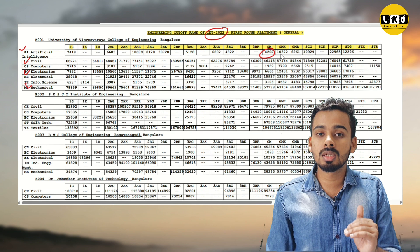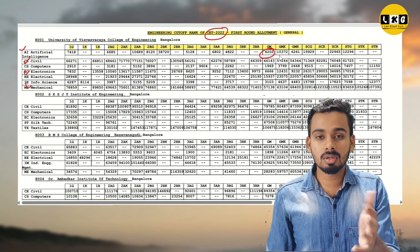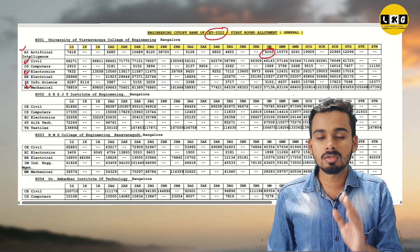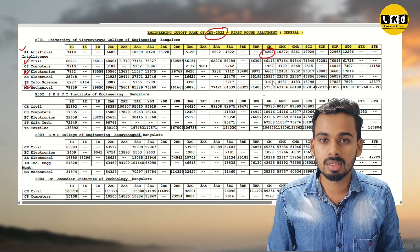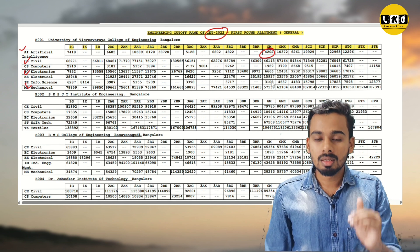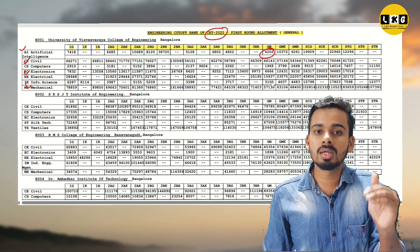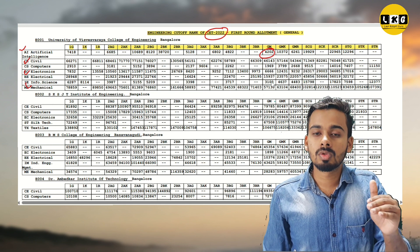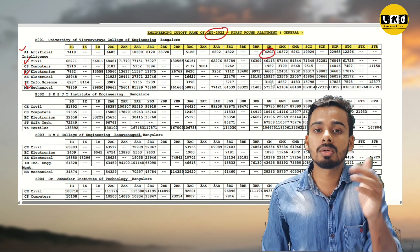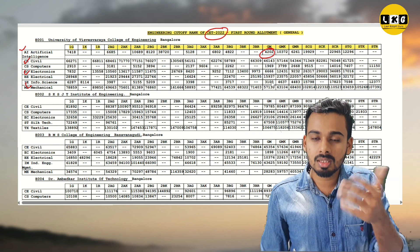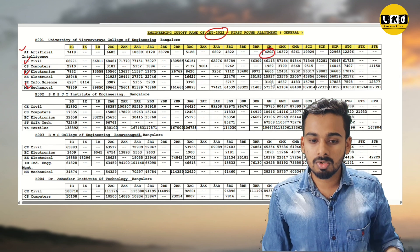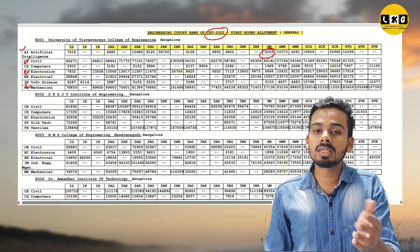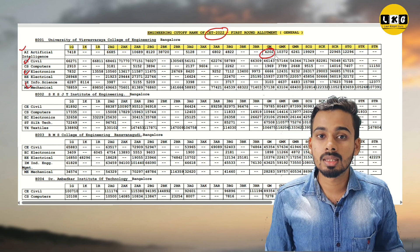The cutoff ranking is defined as the last ranking — the last student admitted. So cutoff is the last CET rank student who got admission. The next admission must have a rank at least equal to or better than the cutoff. For example, 4202 is the cutoff ranking — so round one allotment is filled up to that rank.